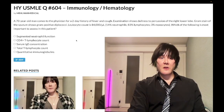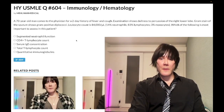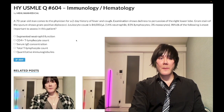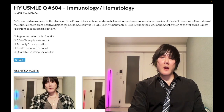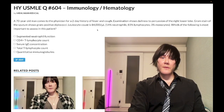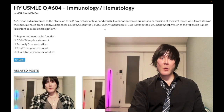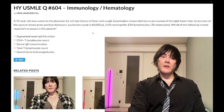A 70-year-old man with a history of fever and cough. Examination shows dullness to percussion of the right lower lobe. Gram stain of the sputum shows gram-positive diplococci — this is strep pneumo. Don't confuse this with gram-negative diplococci, which would be Neisseria meningitidis or gonorrhea. The leukocyte count is 84,000. The normal range for leukocyte count should be 4,000 to 11,000.